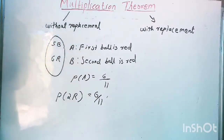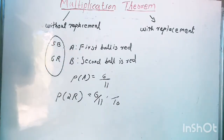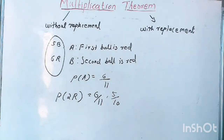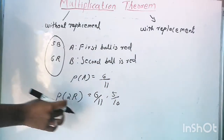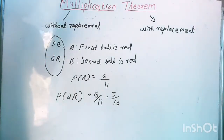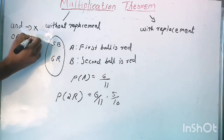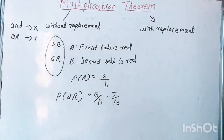How many balls are there in the bag now? Only ten balls, because we took one ball, and that ball was red. So the number of red balls remaining is five. Now, if you want to get two red balls, that means the first ball is red AND the second ball is red. Here we have the word 'and', so we will multiply. If you have 'and', then in probability we multiply the probabilities. If you have 'or', then we add the probabilities.